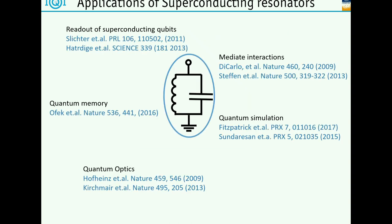Let me just say one thing: even though at first maybe they are boring quantum systems, they are very, very useful it turns out. This is just a very small selection of papers where superconducting resonators are used - you can read out superconducting qubits, you can use them to mediate interactions as a quantum memory, you can use them for quantum simulation, you can use them for quantum optics. There's a whole bunch of applications where these resonators are really useful.